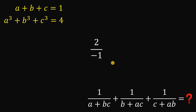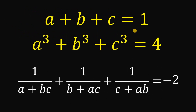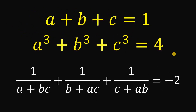So our denominator is just negative 1. And 2 over negative 1 simply equals negative 2. And there you have it — this is the value of our expression. Therefore, given A plus B plus C equals 1 and A cubed plus B cubed plus C cubed equals 4, the numerical value of 1 over (A plus BC) plus 1 over (B plus AC) plus 1 over (C plus AB) equals negative 2. And as always, we are done.